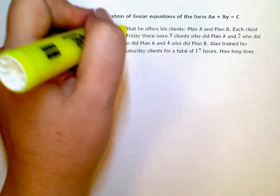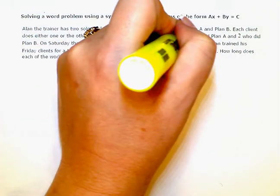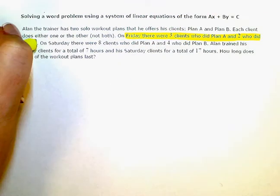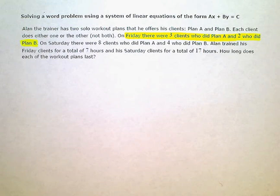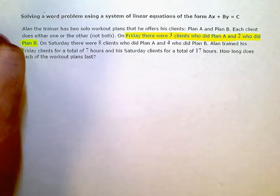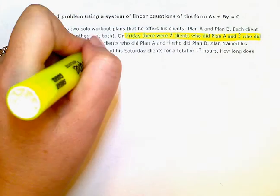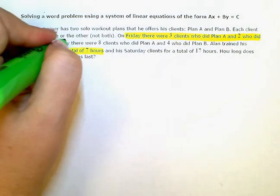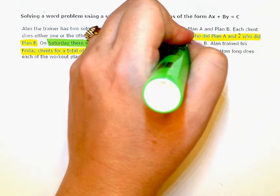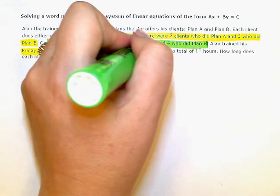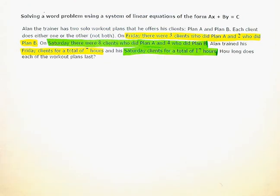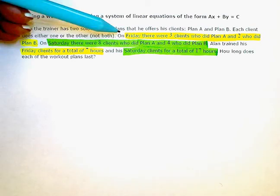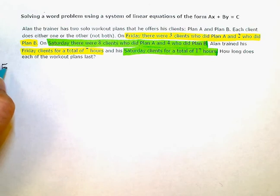I'm told that on Friday there were three clients who did Plan A and two who did Plan B. And on Saturday, he trained for a total of 17 hours. So I'm going to use that information to set up my two equations. The information highlighted in yellow is going to go into my Friday equation.